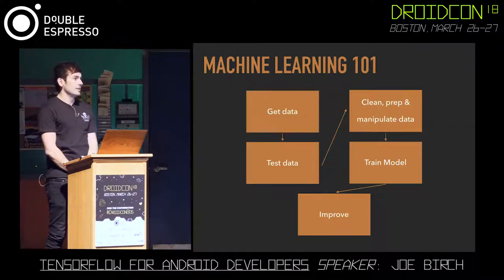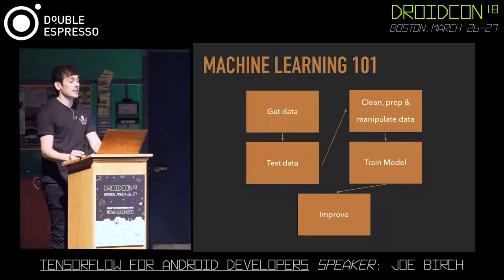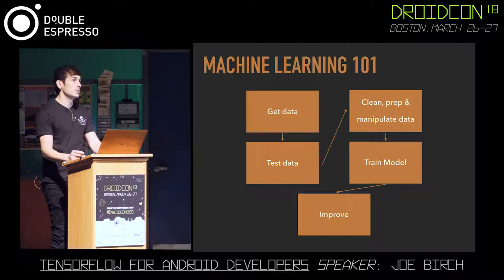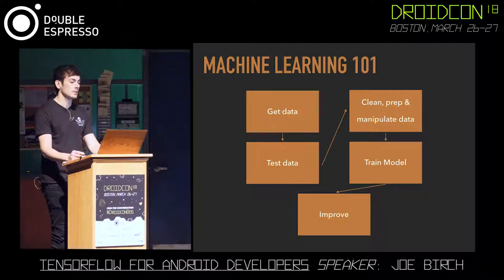The term machine learning over the last few years has probably been quite hard to escape from, especially in the Android community. Machine learning is the process of applying artificial intelligence to our applications to allow them to learn automatically, giving us the ability to improve our products for users without needing to manually encode any of these behaviours. These applications observe the data we give them, look for patterns, and then use those patterns to influence and make decisions on future work.